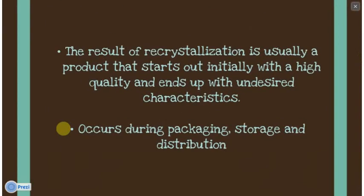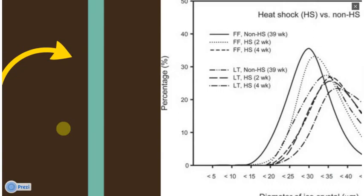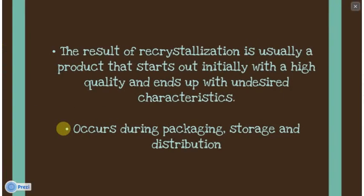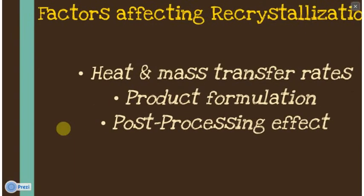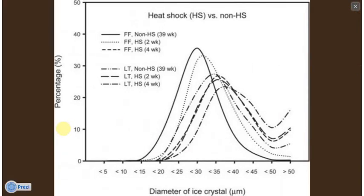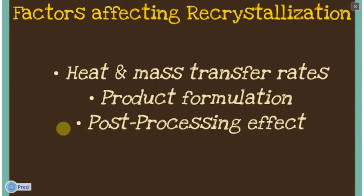Lastly, recrystallization. Recrystallization is usually a product that starts out initially with high quality and ends up with undesired characteristics. It occurs during packaging, storing, and distribution. The factors affecting recrystallization are heat and mass transfer rates, product formulation, and post-processing effects.